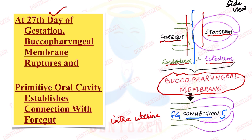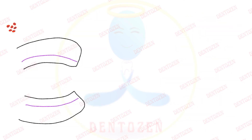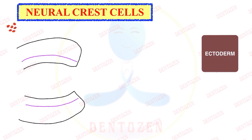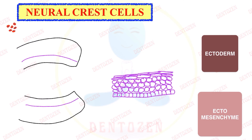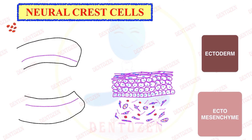Let's see the different layers present in the primitive mouth at this moment. If we magnify this region, we see it is lined by two layers: ectoderm and ectomesenchyme. The outer layer on top is the ectoderm layer, which is made up of stratified squamous epithelium — stratified because it is made up of layers of squamous epithelium cells.